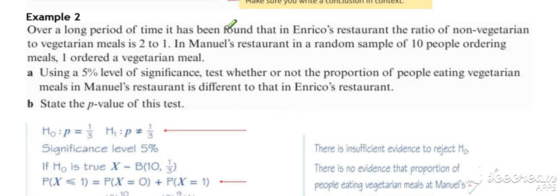Example two looks at a two-tailed test. Over a long period of time, it has been found that in Enrico's restaurant the ratio of non-vegetarian meals is two to one.